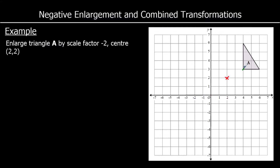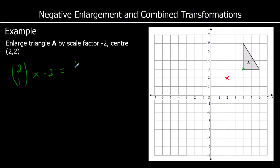I'm going to start with one of the corners — it doesn't matter which one — and look at how far you've got to move from the centre of enlargement to get there. To get to this green point, I go right 2, up 1. So if I write that as a column vector, that's (2, 1). And I'm going to multiply that change by negative 2. So the change in x was 2; 2 times negative 2 is negative 4.